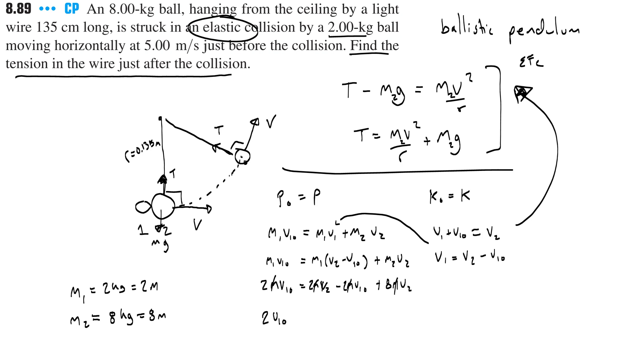So I get 2 v1,0 equals 2 v2 minus 2 v1,0 plus 8 v2. We already combined it. I have this equation and I need to simplify it more. We can combine terms. When I add this to the right, I get 4 v1,0 and then 10 v2. So therefore v2 is equal to 4 over 10 times v1,0, or 4 over 10 times 5 meters per second.